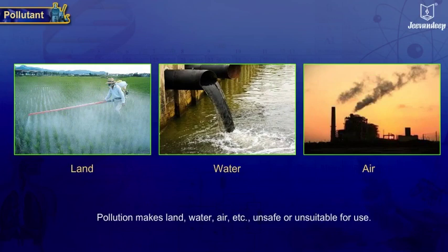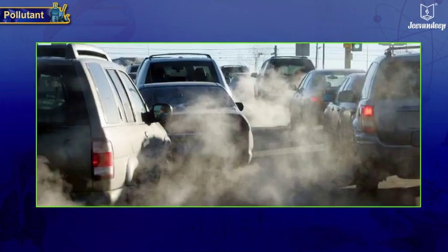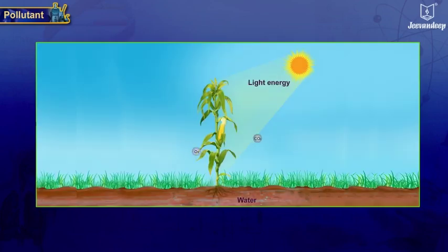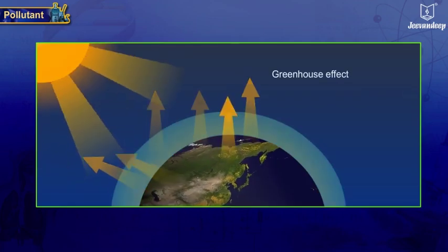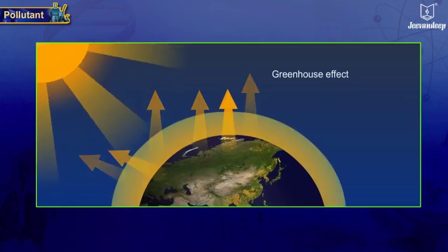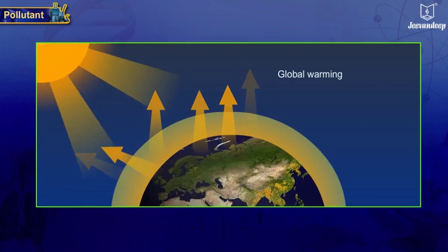Some substances are not harmful by nature but are considered pollutants only after their concentration exceeds specified limits. For example, carbon dioxide is used by plants for photosynthesis, but increasing CO2 levels lead to the greenhouse effect and global warming.